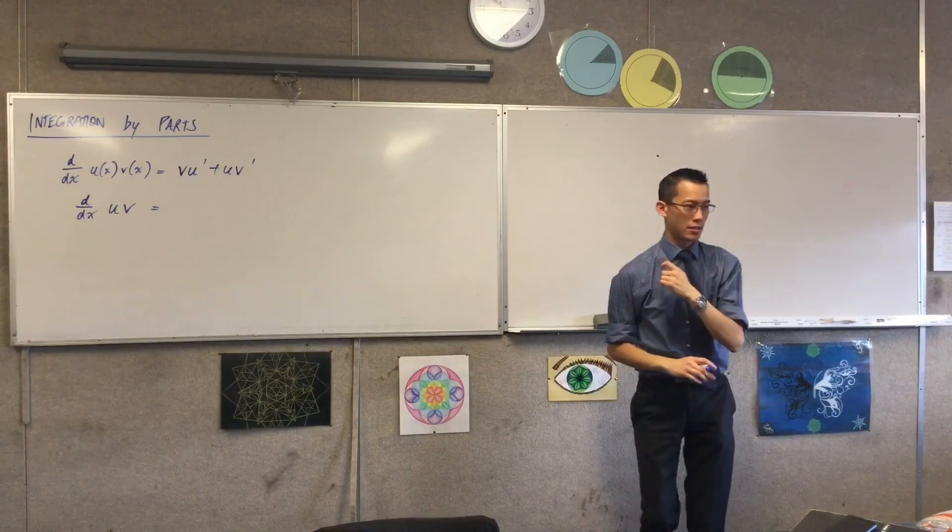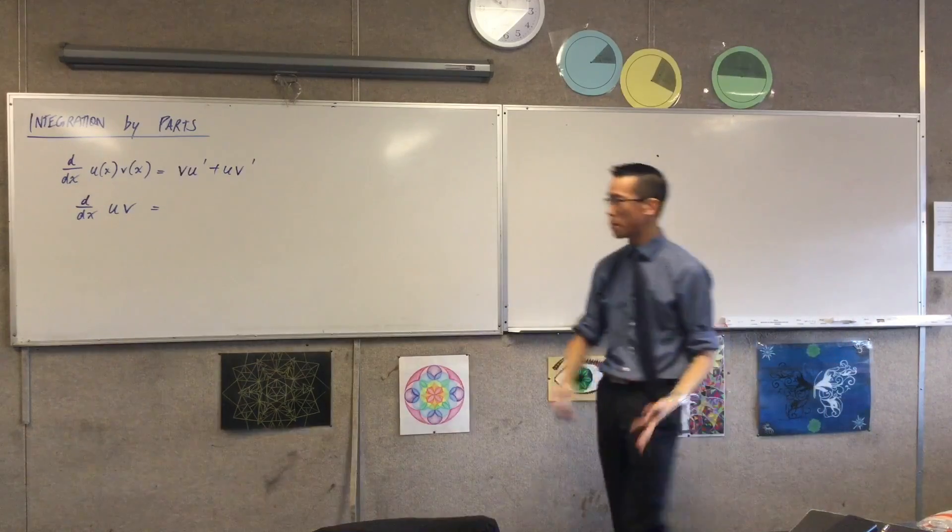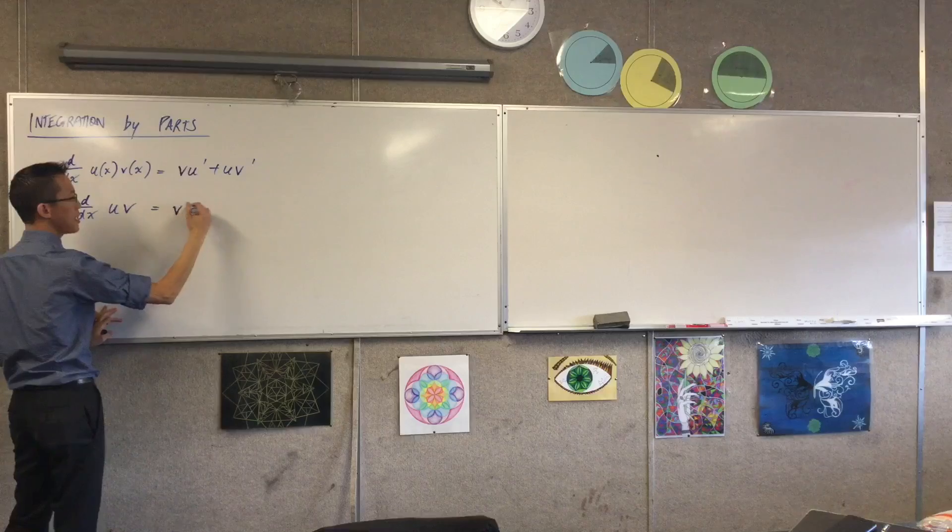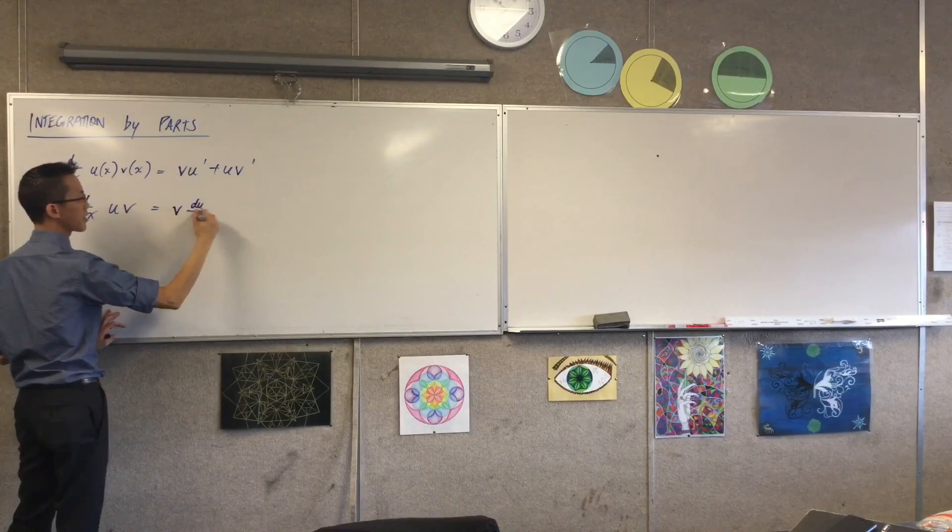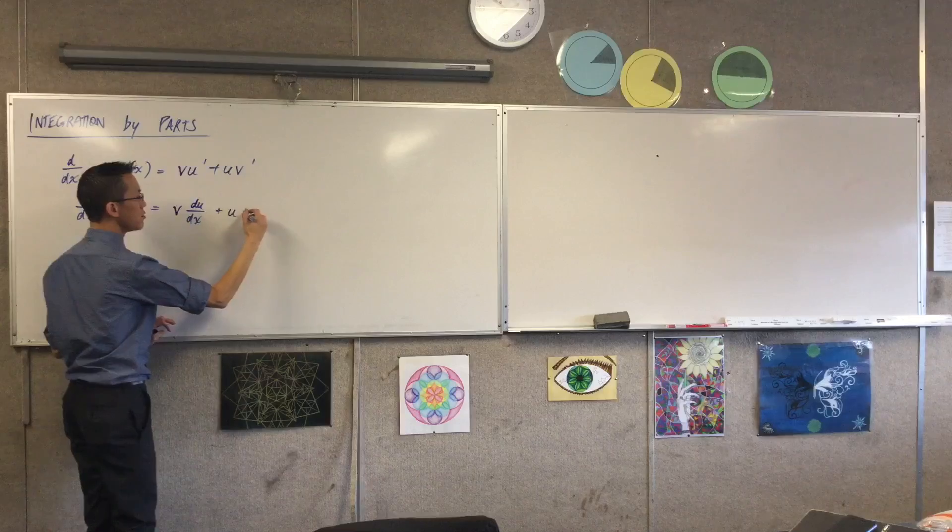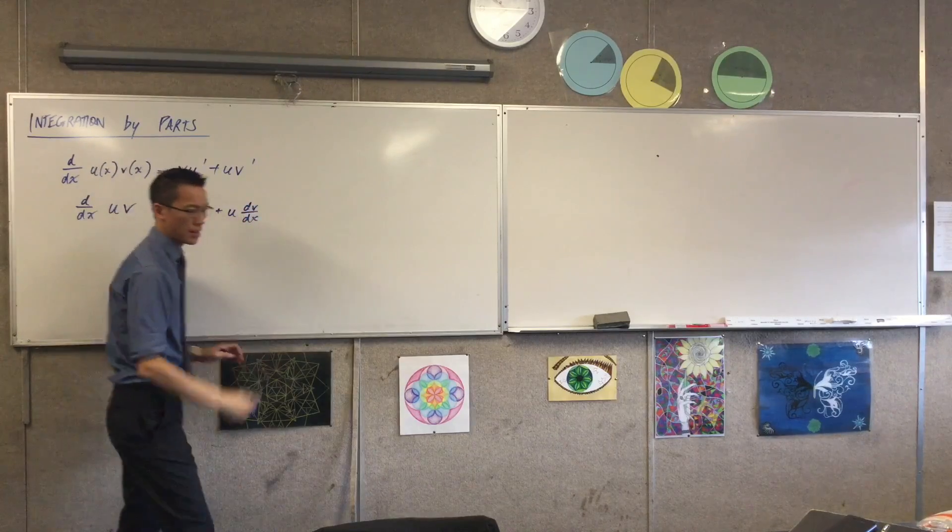On the right-hand side, I'm going to write u dash and v dash in proper d on dx form, right? So I would write this as v times du on dx. That's what u dash actually means. Plus u times dv on dx.